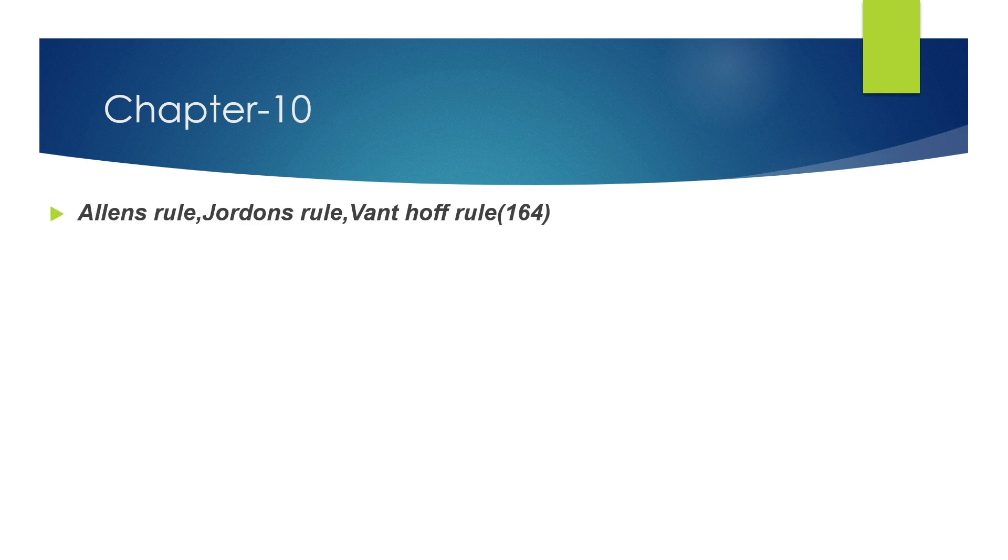Starting with chapter 10, that is Organisms and Population. The first question: Allen's rule, Jordan's rule, and Vanthoff rules. These three rules are very important. The answer is on page number 164 according to your book.